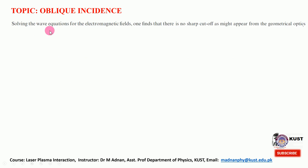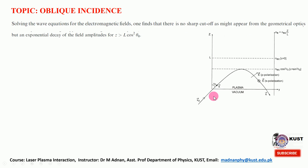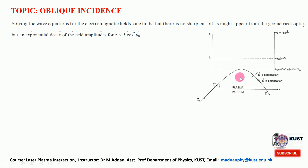Solving the wave equation for the electromagnetic field, one finds there is no sharp cutoff as might appear from geometrical optics, but rather an exponential decay of the field. Those field profiles will be discussed in the coming lectures — first for s-polarization and then for p-polarization.